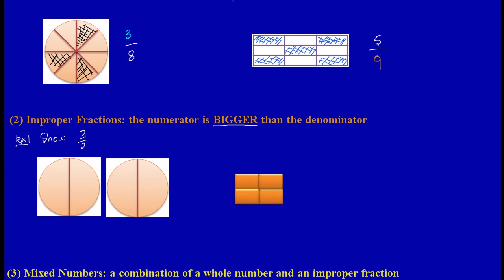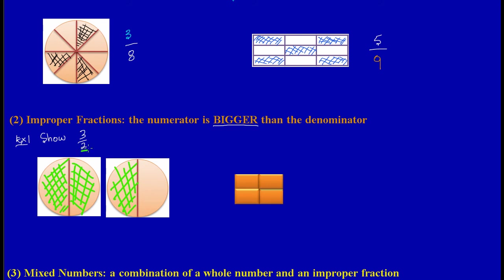We're asked to show three out of two, so we need to shade a total of three parts. I shade one part, then a second part — that's two parts shaded — but I need three, so I go to the second diagram and shade another part. I've now shaded one, two, three parts. Inside each hole there are two parts, which represents the two in our denominator.